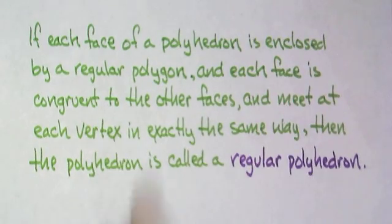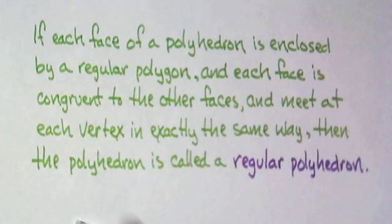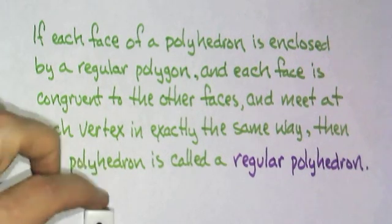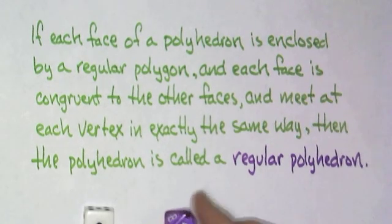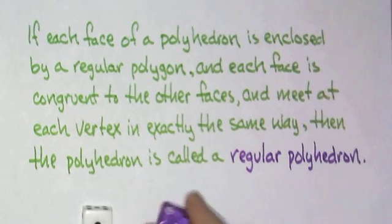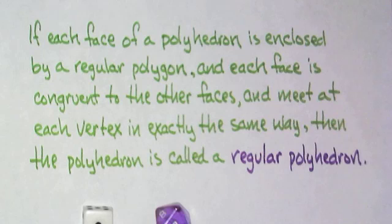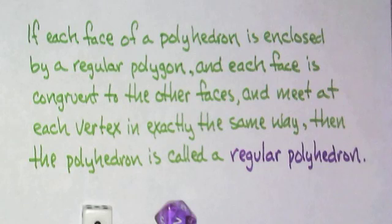That's kind of an important part. And I have some examples. I won't try to draw these. A cube, like a regular guy here, that's a regular polyhedron. And that has six faces. This is an octahedron. It has eight faces, and every face is an equilateral triangle.